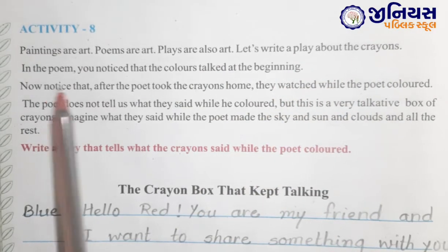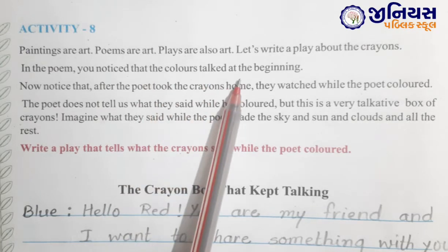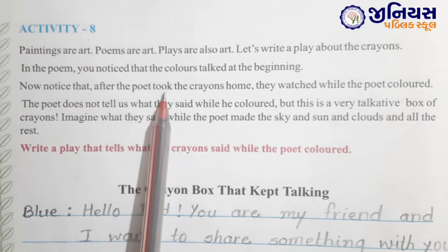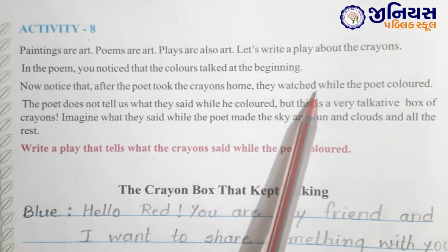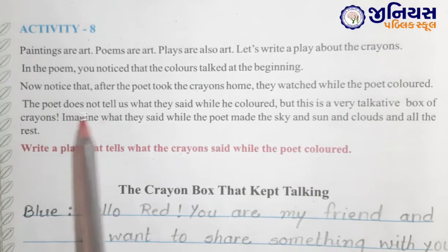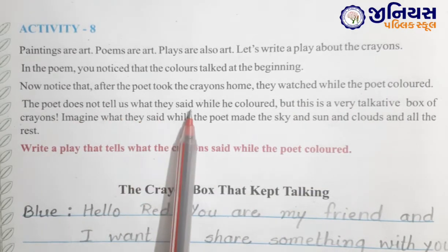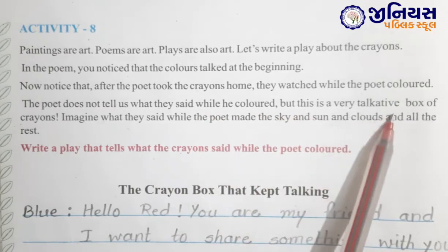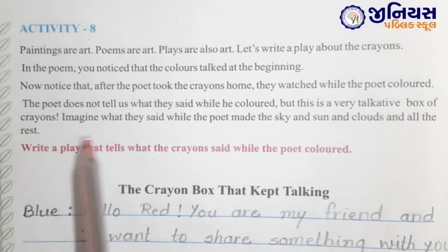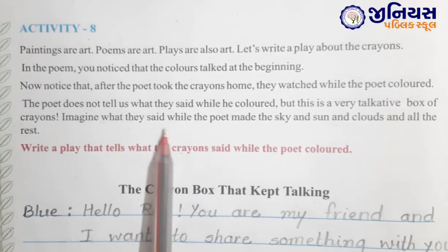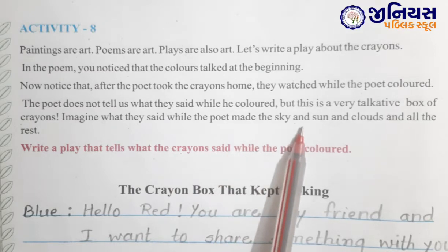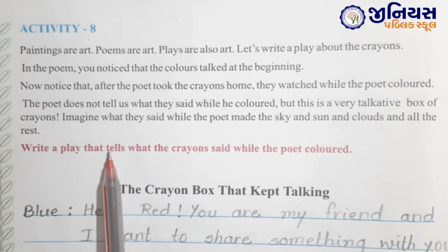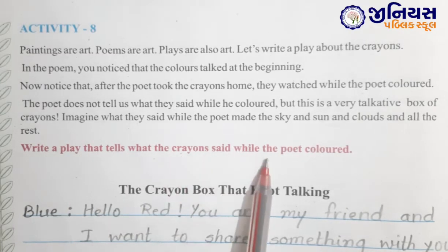In the poem you notice that the colors stopped at the beginning. Now notice that after the poet took the crayons home, they watched while the poet colored. The poet does not tell us what they said while he colored, but this is a very talkative box of crayons. Imagine what they said while the poet met the sky and sun and clouds and all the rest. Write a play that tells what the crayons said while the poet colored.